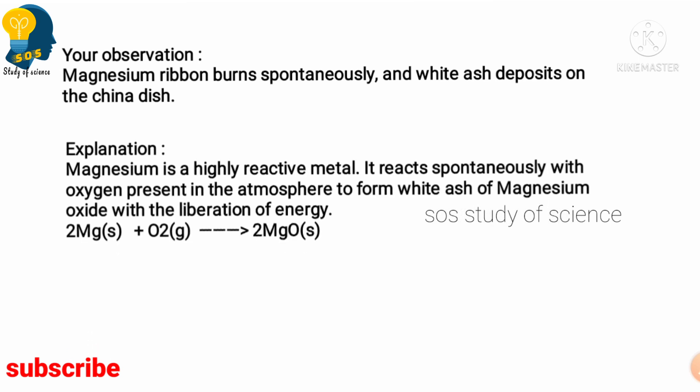How can we explain this activity? See, magnesium is first of all a highly reactive metal. When it is spontaneously reacting with the oxygen, it forms a white ash of magnesium oxide. How can we represent this in a chemical equation? Magnesium is burning in the presence of oxygen to form the magnesium oxide.